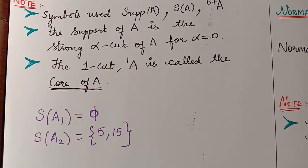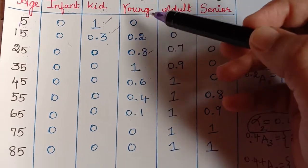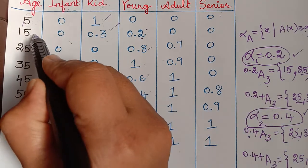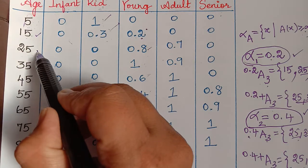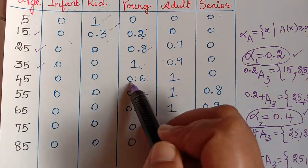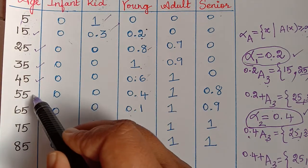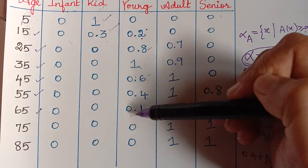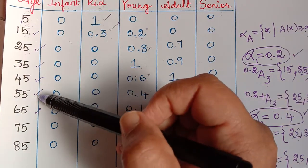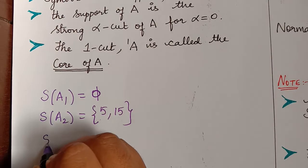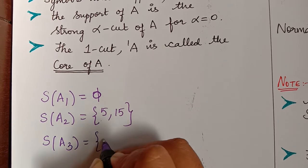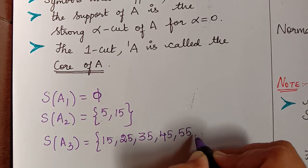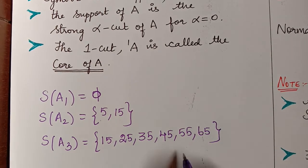Similarly for the set A3, the elements with membership greater than 0 are: 15 (grade 0.2), 25 (grade 0.8), 35 (grade 1), 45 (grade 0.6), 55 (grade 0.4), and 65. So the support of A3 is {15, 25, 35, 45, 55, 65}. This is how we write the support of a fuzzy set.